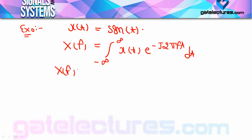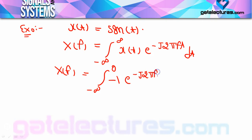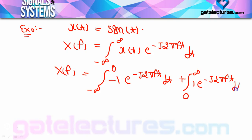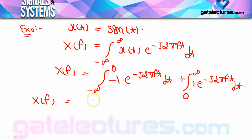Since signum(t) is minus 1 on the negative side and plus 1 on the positive side, we integrate from minus infinity to 0 with x(t) = −1, and from 0 to infinity with x(t) = +1. Performing the integration, the first part gives e^(-j2πft)/(j2πf), with limits from minus infinity to 0.